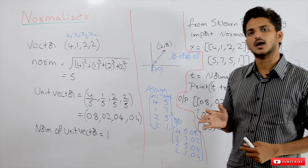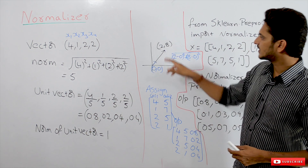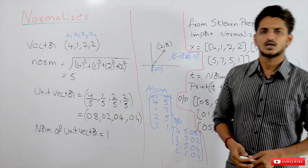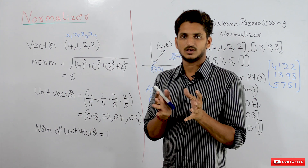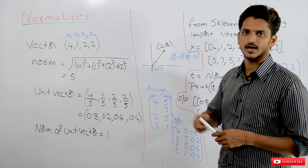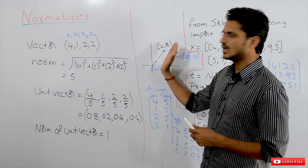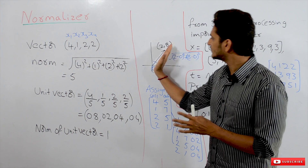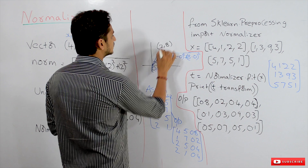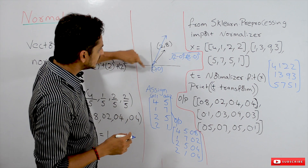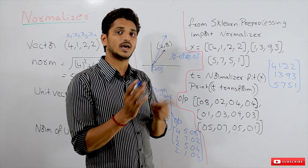Before going into the concept, we must have some basic mathematical knowledge on vector calculus. A vector in a two-dimensional space is given as (2, 8). A vector has both magnitude and direction — it moves in a certain direction, and the magnitude means the length of the vector. The length of the vector changes depending on the vector.